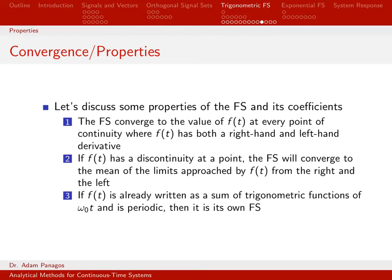Things get interesting when we start having discontinuities, and that's what point two talks about. If f(t) has a discontinuity — a jump — what happens is the Fourier series actually converges to the mean of the limits approached from the right and the left. Whatever value you get coming from the left and some other value coming from the right, because it's discontinuous there, the Fourier series is going to converge to the middle of those two values. It's not going to converge to either the right side or the left side; it picks this average value in the middle.